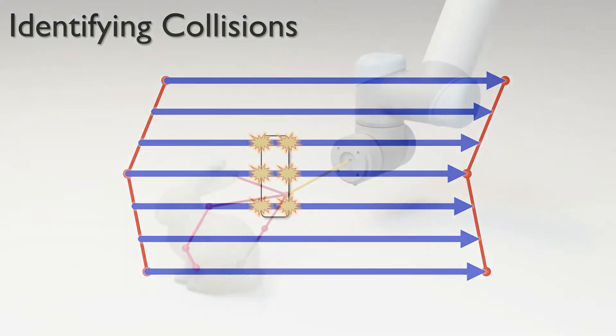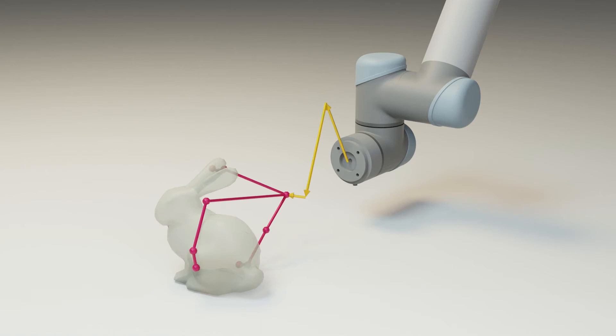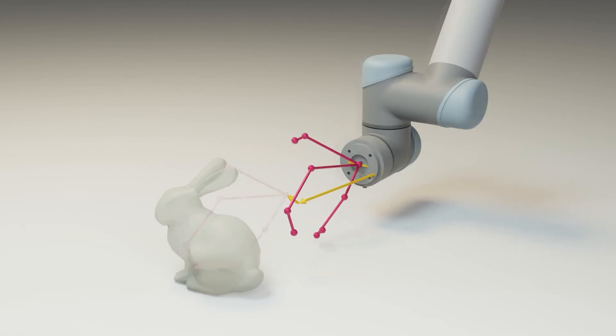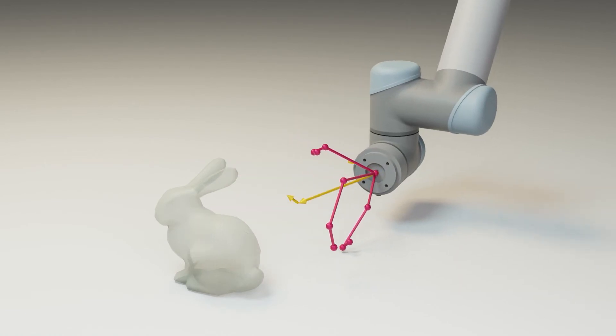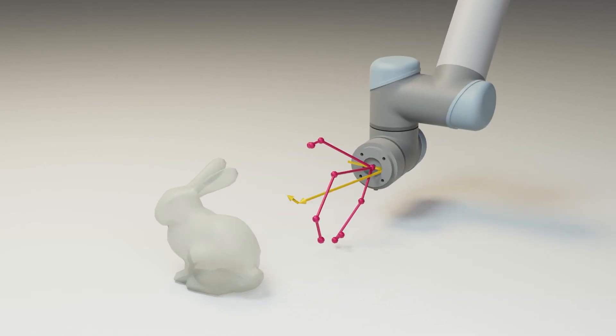We now perform the co-optimization that finds the gripper skeleton and the insert trajectory that minimize the objective function. A solution is found when there is no collision between the gripper skeleton and the object at any point along the trajectory.